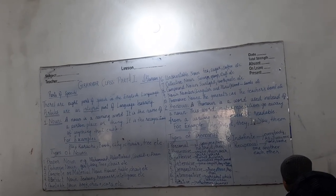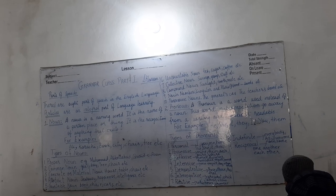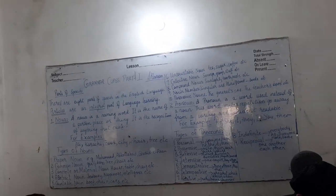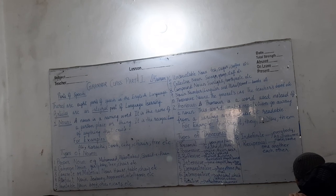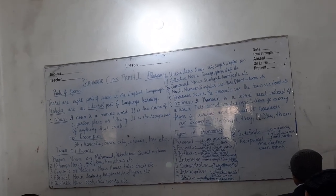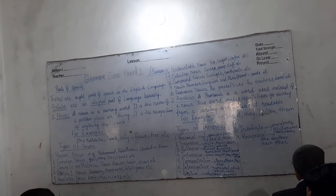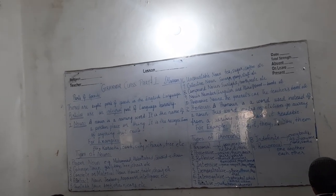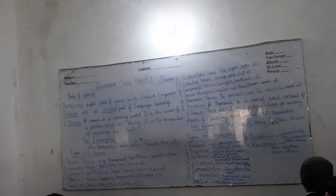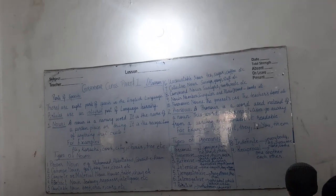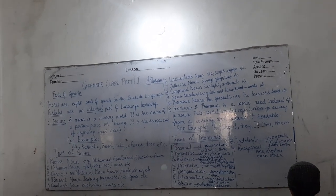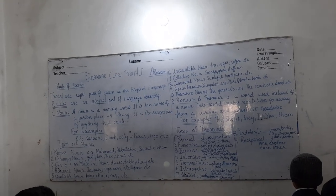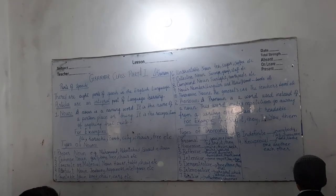Next is relative pronouns: whichever, whoever, whomever. Number eight is indefinite pronoun: everybody, all, everyone, none, some, etc. The last type is reciprocal pronouns: one another, each other. I hope you have understood these two parts of speech — noun and pronouns. Please like and subscribe to our channel; the next part is coming soon. Thank you.